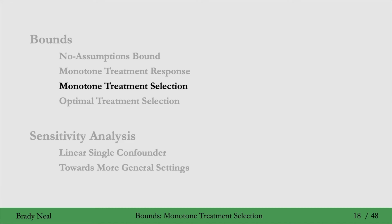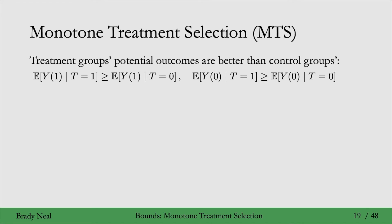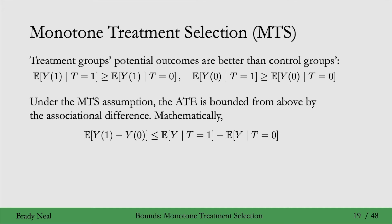We'll now cover another assumption and the corresponding bound that follows from it: the monotone treatment selection assumption. This assumption is that the treatment group's potential outcomes are better than the control group's — the potential outcome Y1 is better in the treatment group than in the control group, and similarly Y0 is better in the treatment group. You can think of this as positive self-selection, where units with better outcomes, regardless of treatment group, self-select into the treatment group. Under this assumption, the ATE is bounded from above by the associational difference — that naive difference is an upper bound on the ATE.